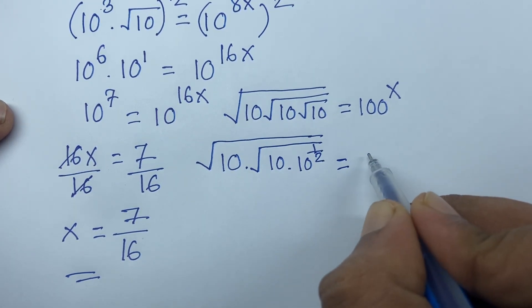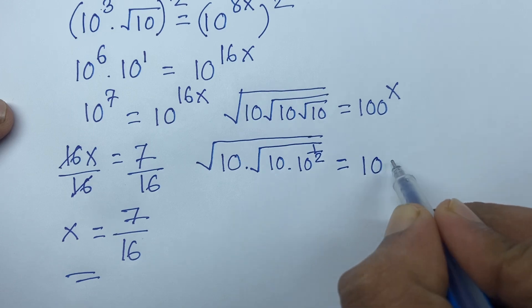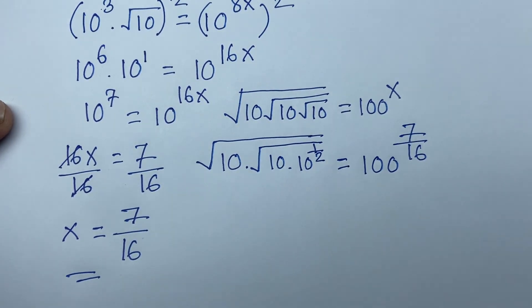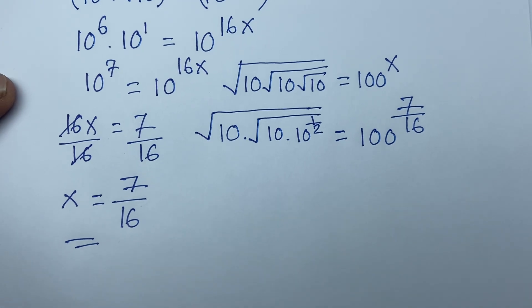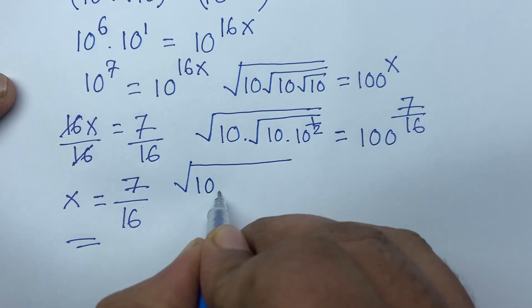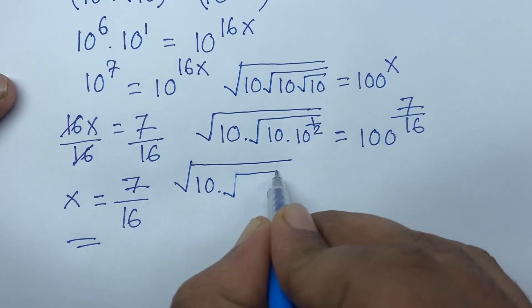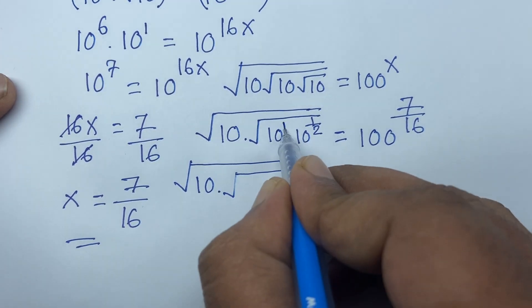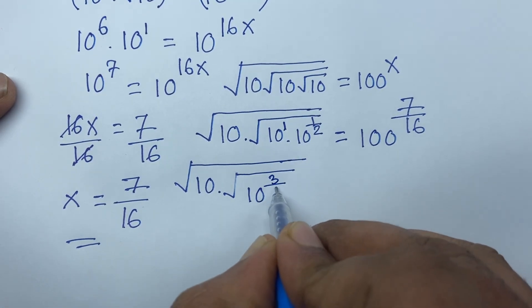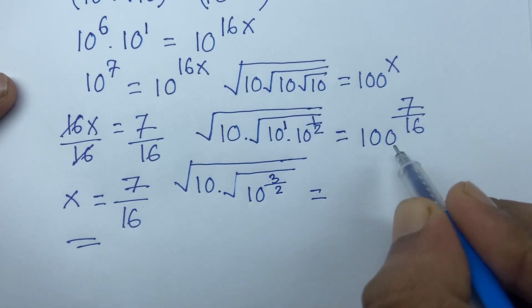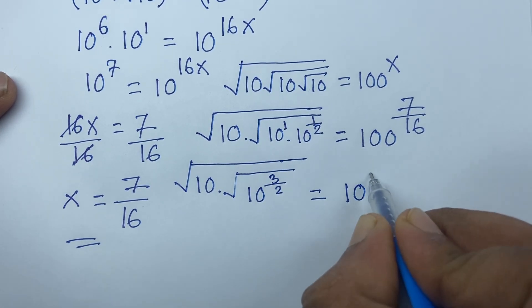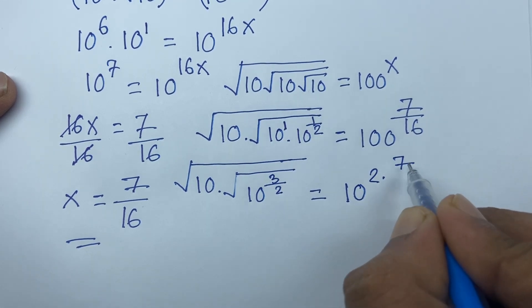So it is equal to 10 to the power — with x equal to 7 over 16. I can see 10 times 10 to the power half gives 10 to the power 1 plus half, which is 3 over 2. The right side is 100, which is 10 squared, to the power 7 over 16.